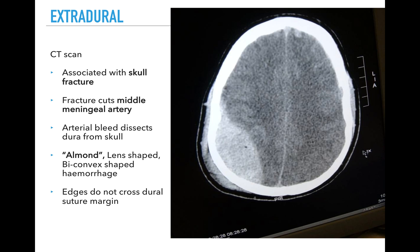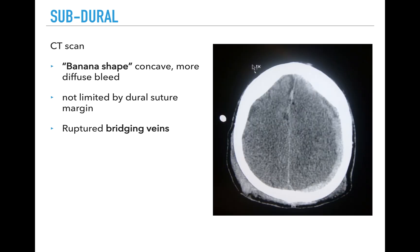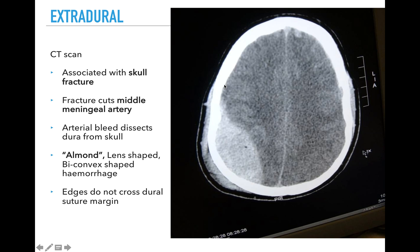The extradural or epidural bleed has a characteristic biconcave almond-shaped appearance on CT, often from a cut of the middle meningeal artery resulting in an arterial bleed, frequently associated with a skull fracture. The subdural appears as a concave shape that can traverse the entire side of the brain, often from ruptured bridging veins. Importantly, subdural bleeds do not get limited by suture lines, whereas extradural bleeds are stopped from crossing suture lines because the dura invaginates into those suture line spaces.